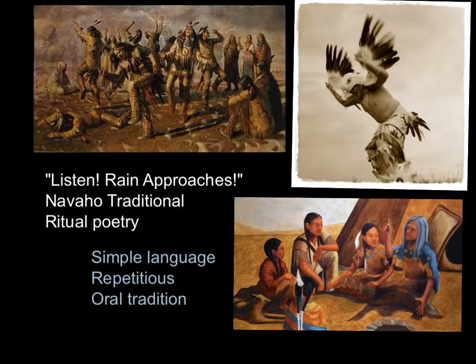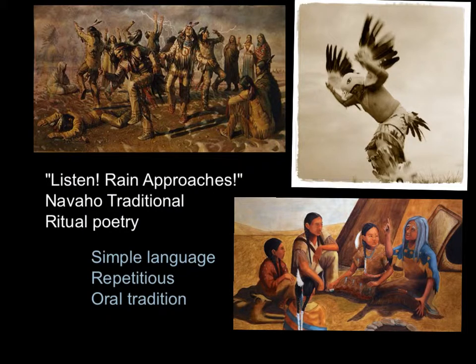The next work is a poem entitled Listen Rain Approaches. It is a Navajo poem, and it's a ritual poem that was used in order to bring rain that was much needed for their crops. You'll notice when we read it that it has very simple language. It is repetitious, often because they used oral tradition. The natives would use the repetition so that it would be easier to remember. Oral tradition is the art of passing literature through word of mouth.